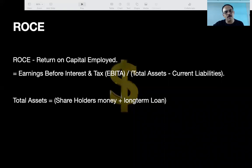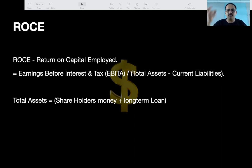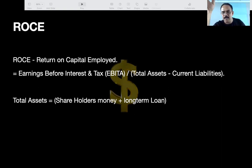Total earning — revenue minus expenditure — is the profit, divided by whatever money was brought in by the shareholders and long-term loan. That is ROCE. That is how ROCE is calculated. Even if the loan is a liability, you are still earning on that capital.